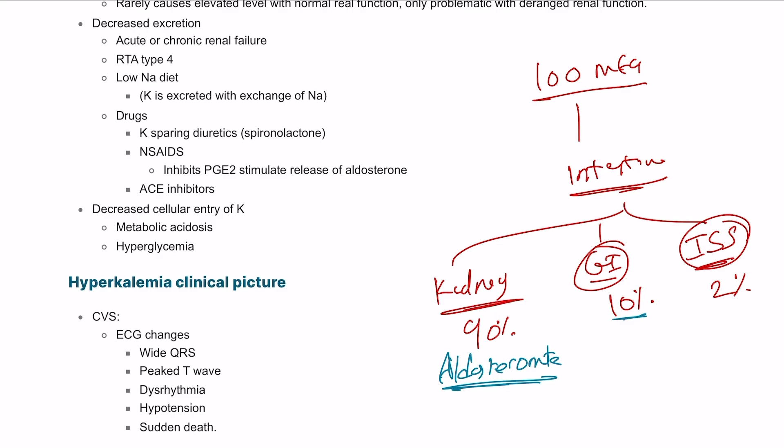In the GI tract it can happen through diarrhea and vomiting, or normally 10 percent will be excreted normally. Potassium is kept inside the cell more than outside.